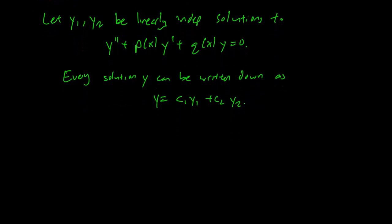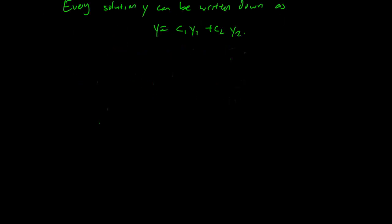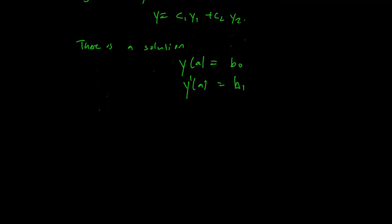And the way to show that actually is as follows. Let us consider one solution to the differential equation and we know that by the existence uniqueness principle there is a solution so that y(a) somewhere is equal to b0 and y'(a) is equal to b1. Let's just drop the a for the moment but what we can do is write down the y's in terms of c1 and c2. So this means that c1·y1 plus c2·y2 is equal to b0 and c1·y1' plus c2·y2' is equal to b1.